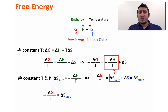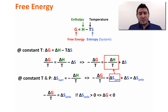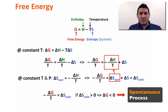In my previous video I explained that for a spontaneous process, ΔS universe always increases, which means ΔS is positive. So if ΔS universe is positive, this means ΔG has to be negative. Therefore, for spontaneous processes, ΔG must be negative.